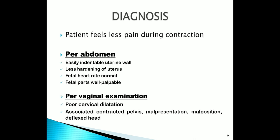In diagnosis of uterine inertia, the patient feels less pain during contraction. On per-abdominal examination, when the hand is placed over the uterus, the uterine wall is easily indentable, with less hardening. Fetal heart rate is normal and fetal parts are well palpable. On per-vaginal examination, there is poor cervical dilatation, associated contracted pelvis, malposition, malposition and deflection, and membranes usually remain intact.